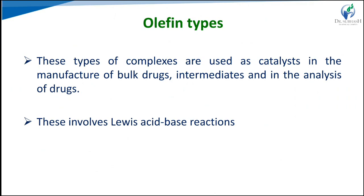The olefin type metal complex involves the interaction of aqueous solutions of metal ions — such as iron, mercury, and silver — with olefins like ethylene to form olefin complexes. These complexes are water soluble and are generally used as catalysts in the manufacturing of bulk drugs or in drug analysis. The process involves the Lewis acid-base reaction, and these complexes are used as intermediates for catalytic reactions.